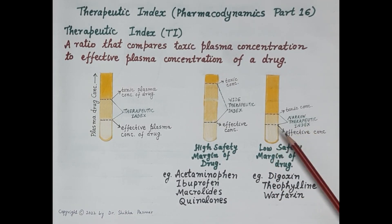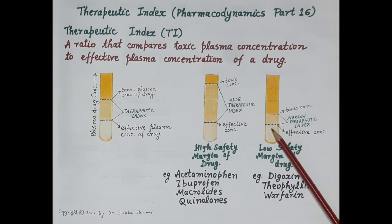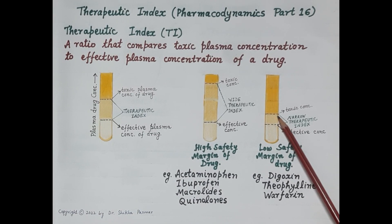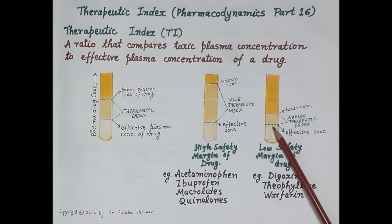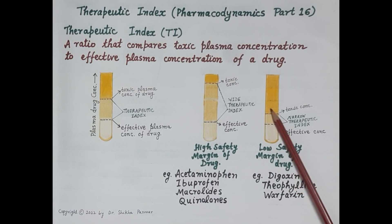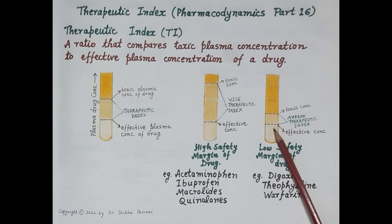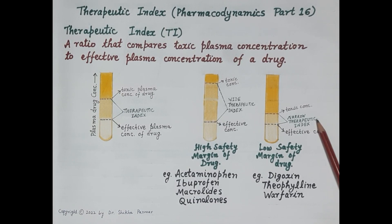Look at this figure — there is a very small difference between the effective concentration that produces the therapeutic effect and the toxic concentration that produces toxicity. A small increase in dose or concentration that produces a therapeutic effect can cause toxicity. These types of drugs have a narrow therapeutic index and must be administered and dosed very carefully.